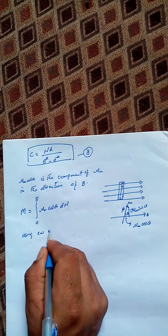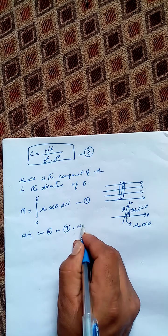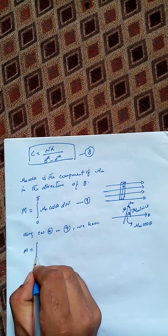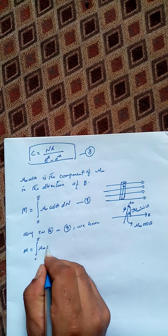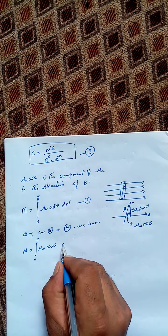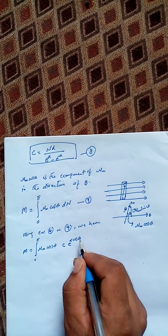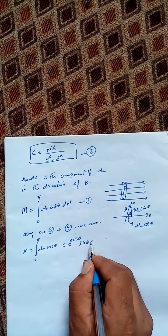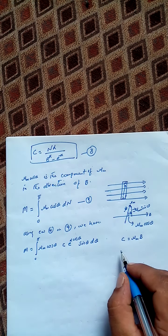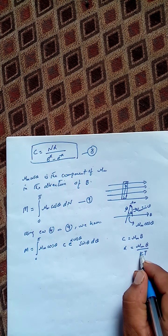Using equation 4 — call this equation 9 — M is equal to the integral from 0 to π of μM cosθ, and substituting dn from equation 1, which gives C times e raised to the power α cosθ, times sinθ dθ, where α equals μMB over kT.